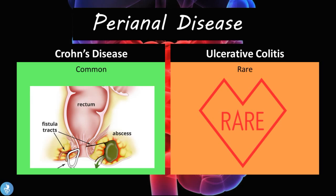Perianal disease: in Crohn's disease this is common, while in ulcerative colitis it is very rare.